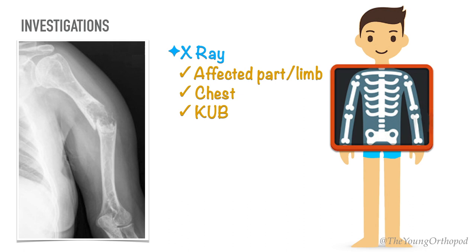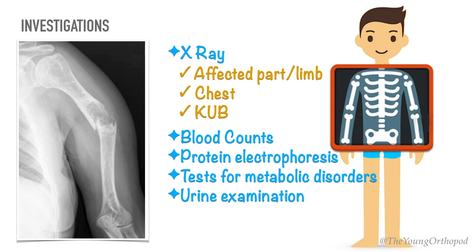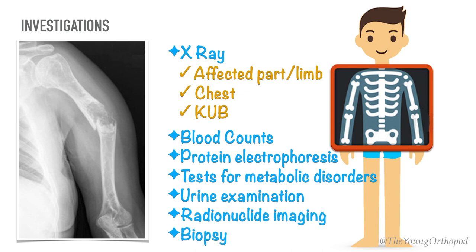Other investigations should be done to narrow down the primary pathology and may include blood counts, protein electrophoresis, tests for metabolic disorders, urine examination, radionuclide imaging, and biopsy.